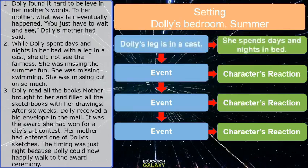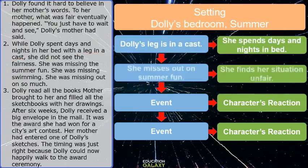The first event is Dolly's leg is in a cast. Her reaction is that she spends days and nights in bed. The second event is she misses out on summer fun — she is injured and has to rest. She is missing out on summer fun. So how does Dolly react to that? She finds her situation unfair.